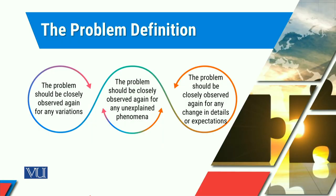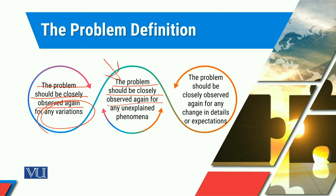Let's look at the problem definition. When we talk about the problem definition, it is said that the problem should be closely observed again for any variation. हमें देखना पड़ेगा कि कहाँ-कहाँ variations आ रही हैं और उन variations को हम कैसे tackle कर सकते हैं। Another important thing is that the problem should be closely observed again for any unexplained phenomenon.